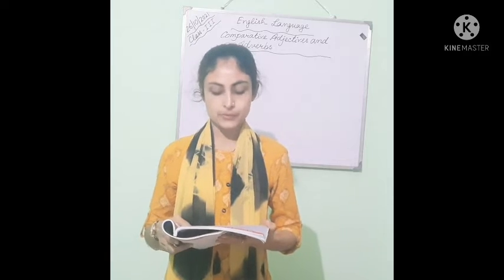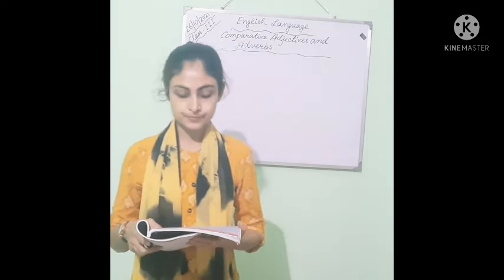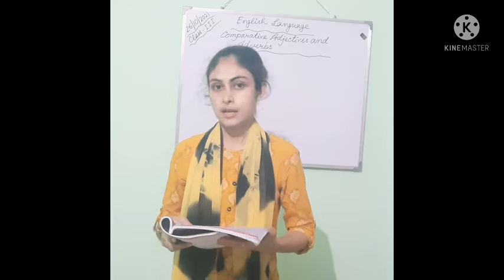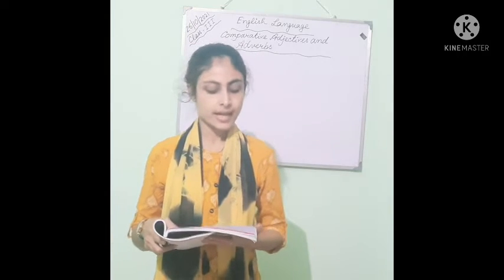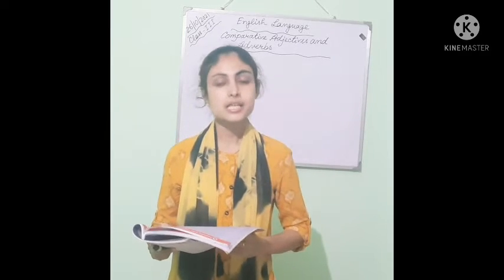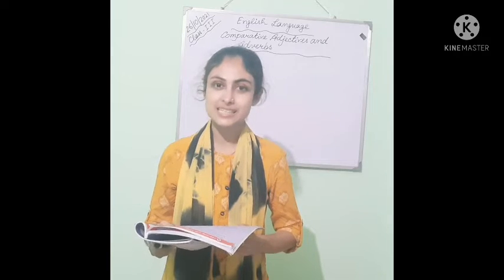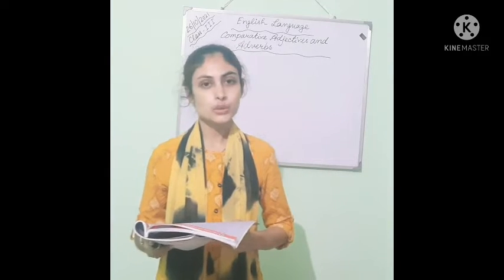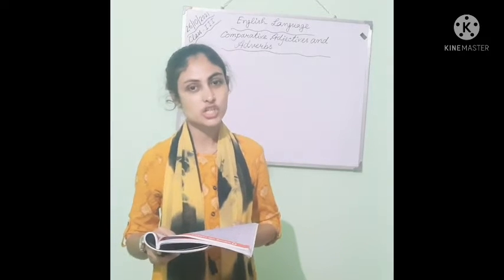For words that end with a vowel plus consonant — vowel means A, E, I, O, U — and consonant means all other alphabets — double the last letter and add -er and than. For example: the horse is bigger than the dog. Here 'big' is the word. We made it comparative by doubling the letter G and adding -er: big becomes bigger.